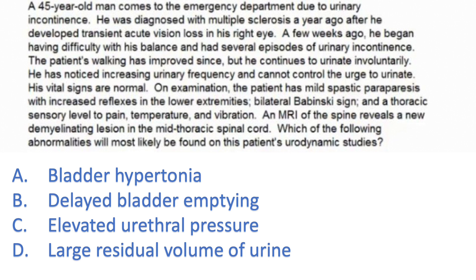Moving to the second question. The last two lines: an MRI of the spine reveals a new demyelinating lesion in the mid-thoracic spinal cord. A demyelinating lesion means multiple sclerosis. Crucially, mid-thoracic is above the sacral spinal cord where the spinal reflex for urinary continence resides — so any lesion above this level is an upper motor neuron lesion.